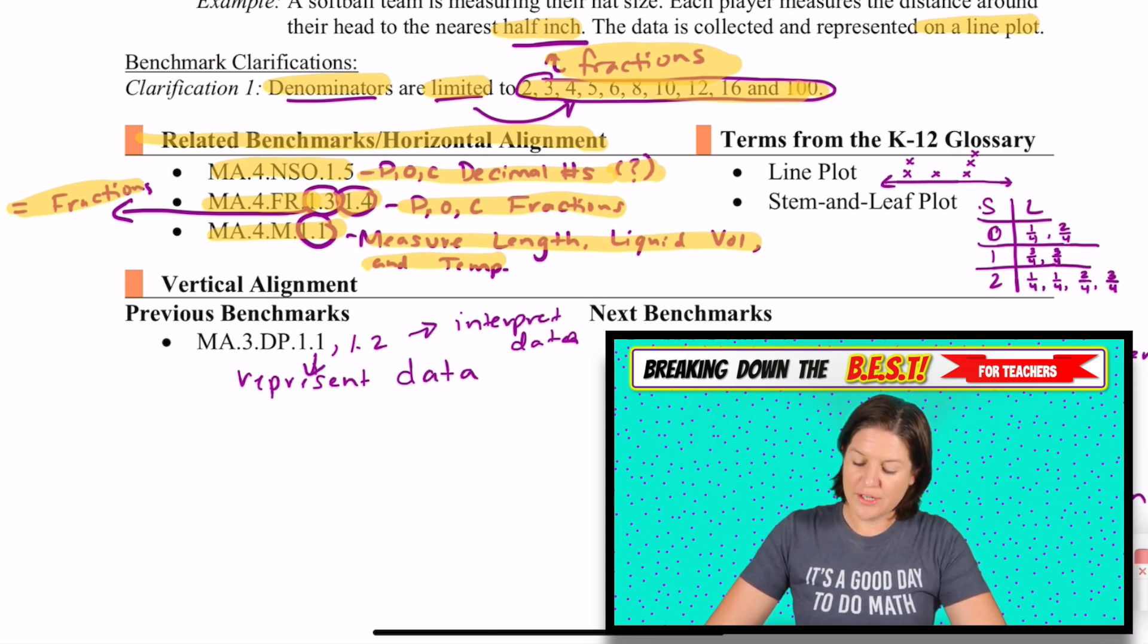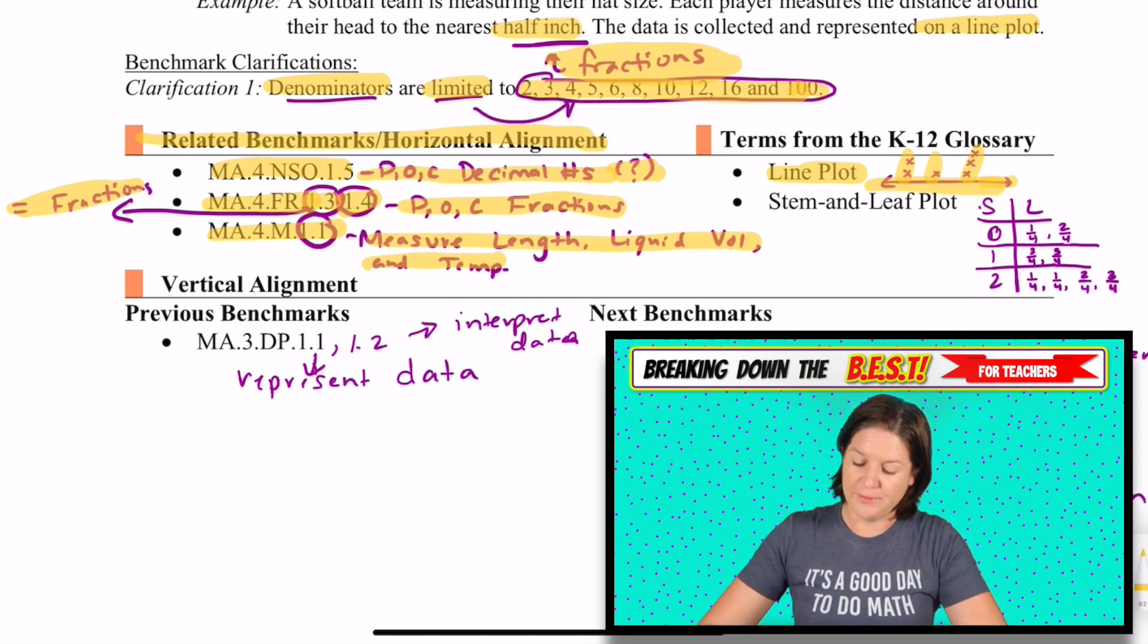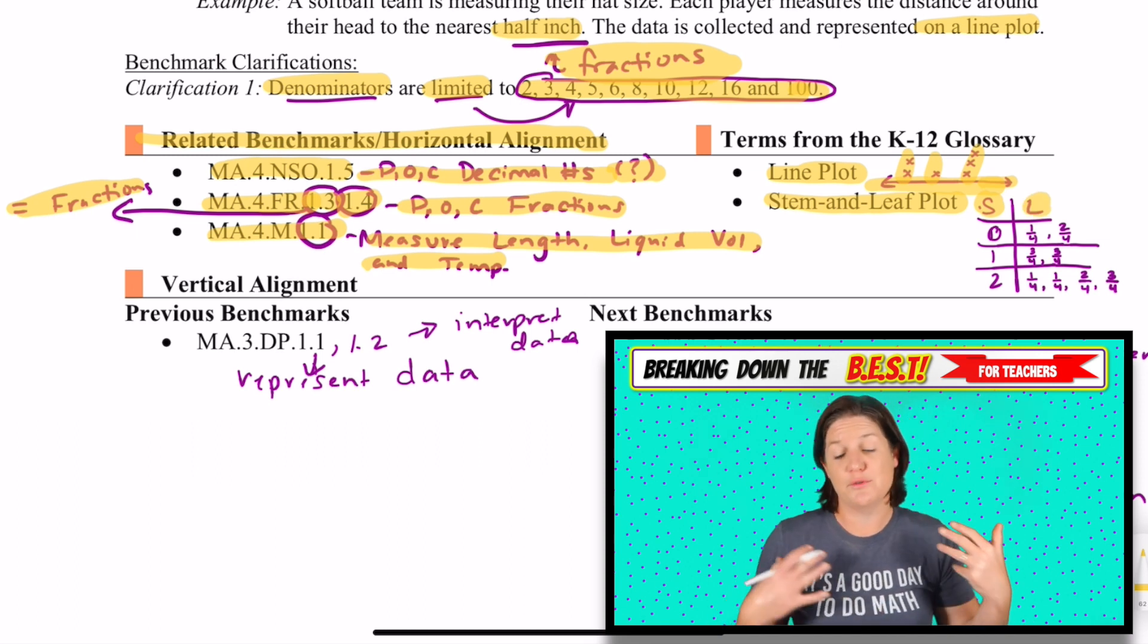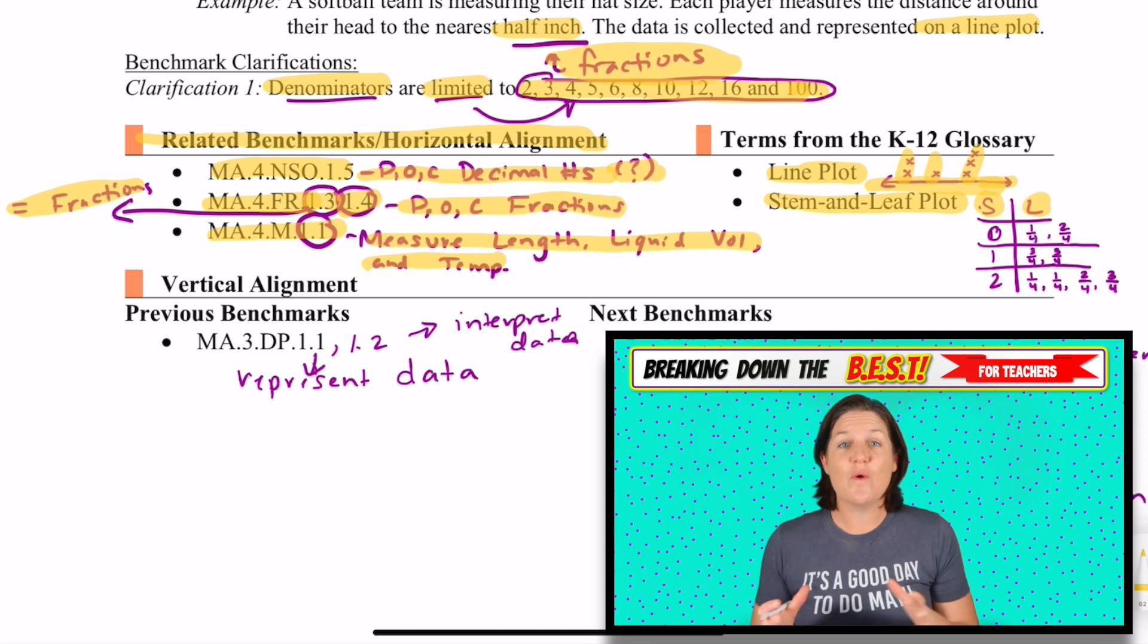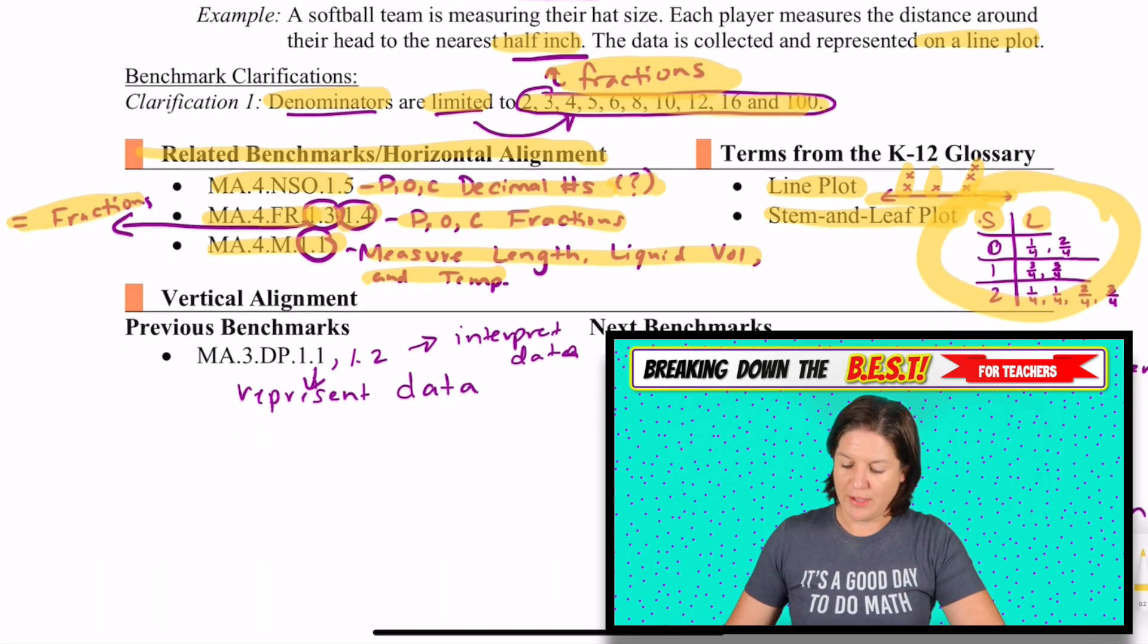Some terms that you need to know: a line plot looks like this, where we've got a number line going on, and we plot the data using x's, or I've seen dots even. So just know that it can vary a little bit. And then a stem-and-leaf plot has a stem and a leaf, and it can be used with whole numbers or fractions.